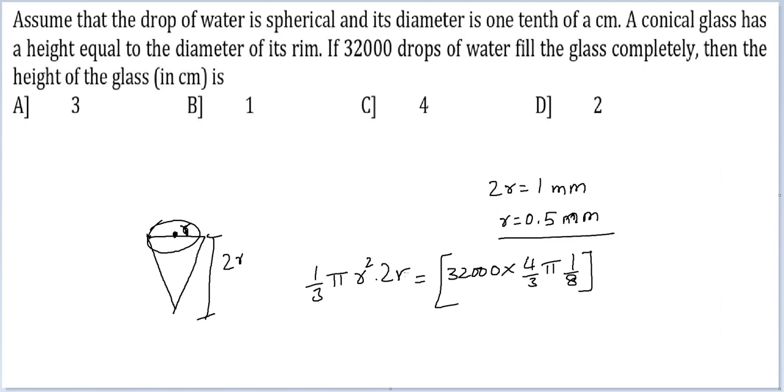Times 2r. So 3 and 3 cancel. 8 and 3200 cancel to give me 400. So 400 and pi and pi cancel.